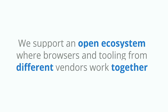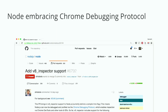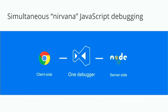Another interesting thing happened recently. Google committed a new project called V8 Inspector to Node, which means Node now has embraced the same Chrome debugging protocol. You can use Chrome DevTools or Visual Studio Code to debug Node because it's the same API. This opens up really interesting possibilities — by having the same API for both the client side and the server side, we can have simultaneous debugging. I call this the Nirvana of debugging, because you can debug both parts of your application if you're a full-stack developer.